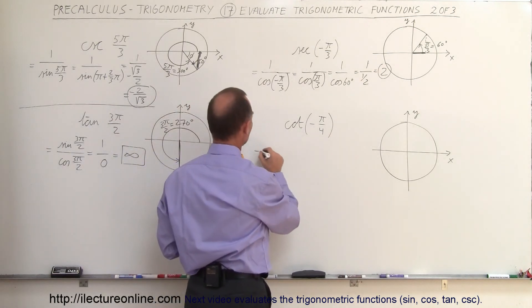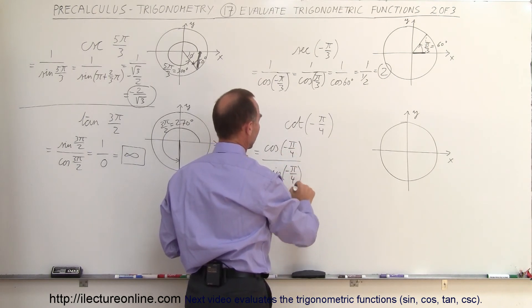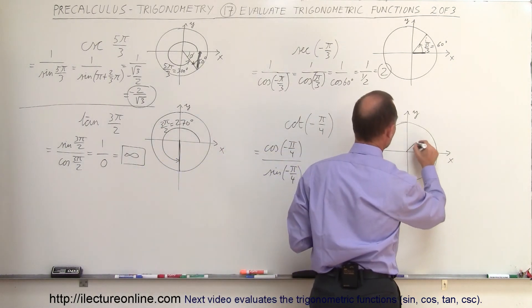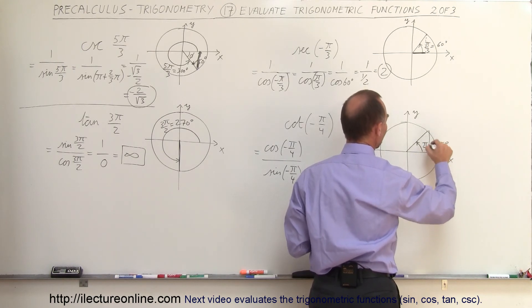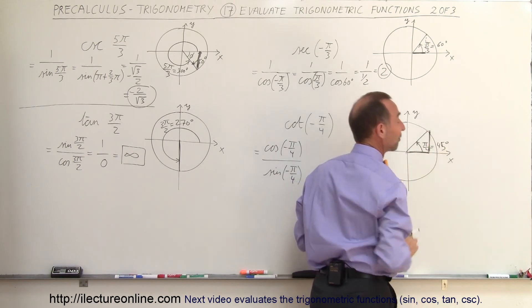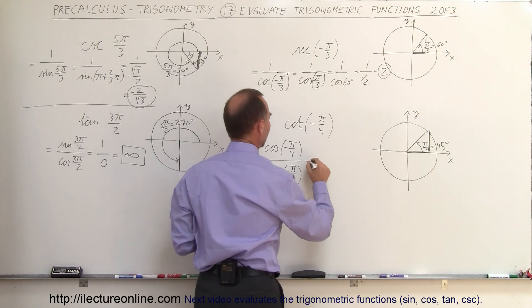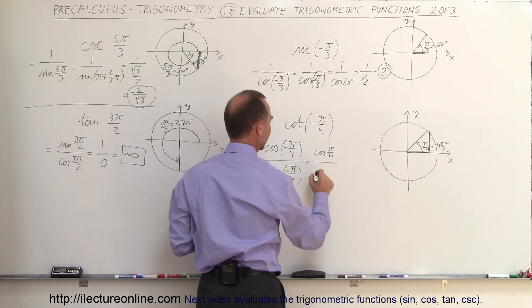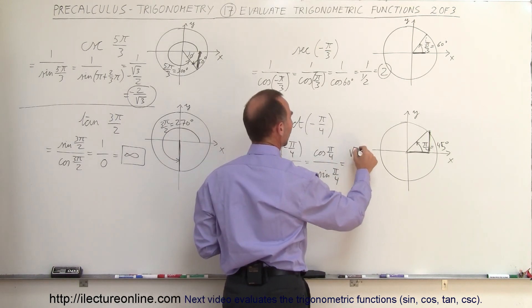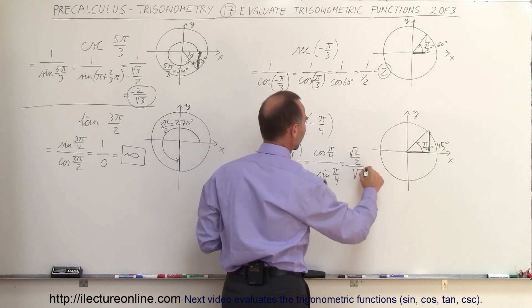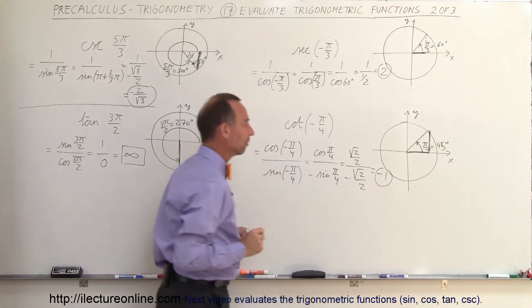Finally, the cotangent of negative π over 4. That can be written as the cosine of negative π over 4 divided by the sine of negative π over 4. Now π over 4 is 45 degrees. At 45 degrees, the sine and cosine are both the square root of 2 over 2. However, since cosine is an even function, the cosine of negative π over 4 equals the cosine of π over 4. Since sine is an odd function, the sine of negative π over 4 equals negative the sine of π over 4. So we get (√2/2) divided by (−√2/2), which equals negative 1 — the final answer.